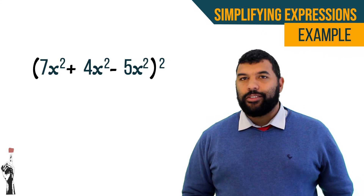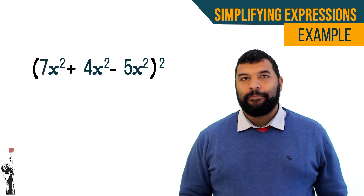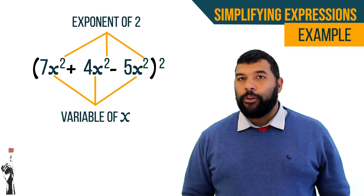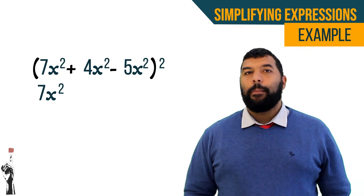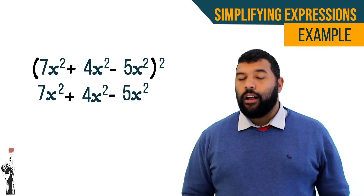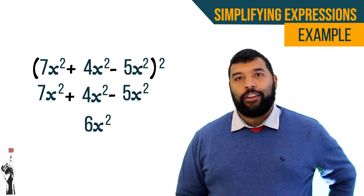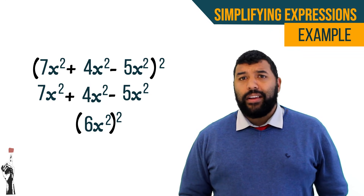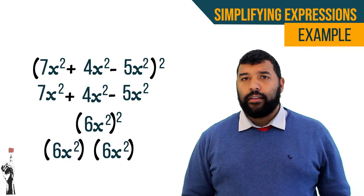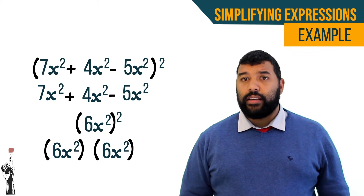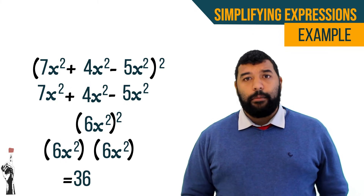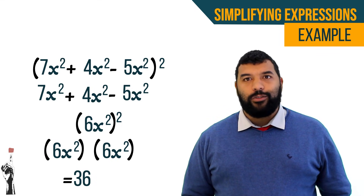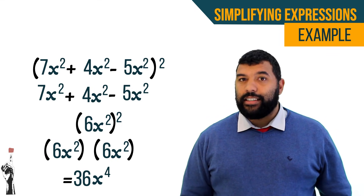For this final example, we apply our rule about gathering like terms. All three terms are like terms because they have variable x with exponent 2. So 7x squared plus 4x squared minus 5x squared gives 6x squared. However, we still have to square our final answer. Taking 6x squared all squared means 6x squared times 6x squared: 6 squared is 36, and x squared squared gives x to the power of 4. So the final answer is 36x to the power of 4.